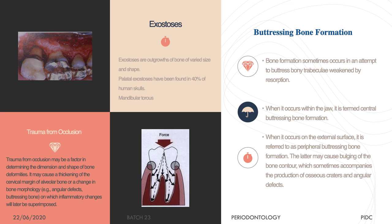During bone resorption, there should normally be bone apposition to replace what was lost. In some cases, new bone cannot be replaced in the same location where bone was lost. Instead, bone is replaced in a peripheral region — peripheral buttressing bone formation — or in the center of the bone trabeculae — central buttressing bone formation — rather than at the position where bone loss occurred.